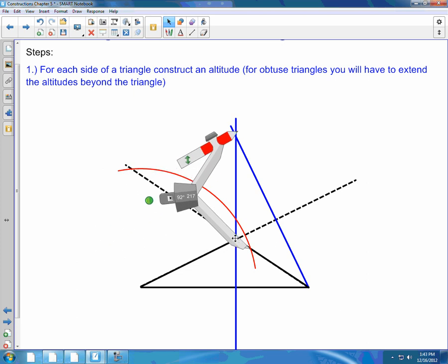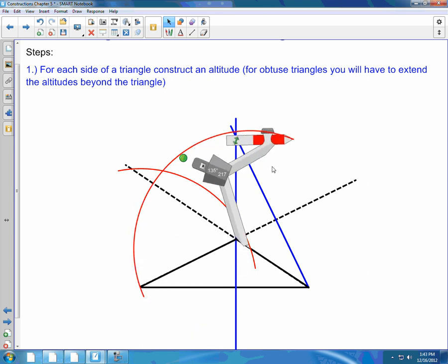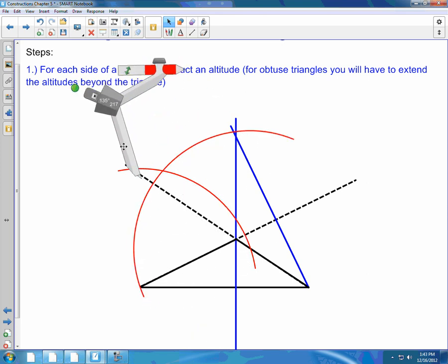So again, center your compass on one of the intersection points. Draw an arc above and below. Repeat with the other intersection point.